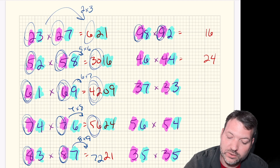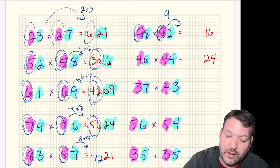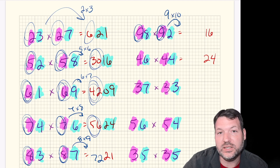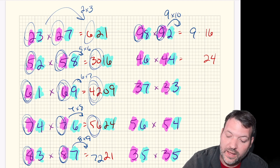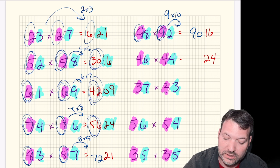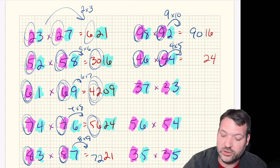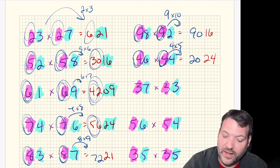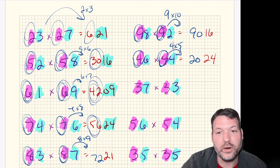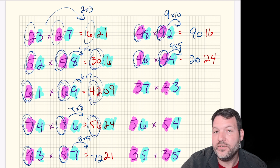For the eights: 8 times 9 is 72, so 83 times 87 is 7221. For a pair of nines: 9 times 10 is 90, giving 9016. And 46 times 44: 4 times 5 is 20, so the answer is 2024.